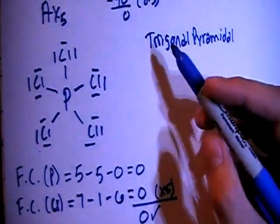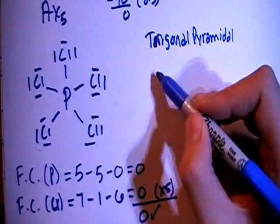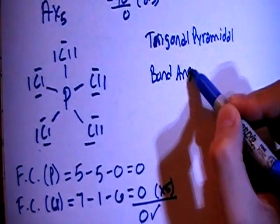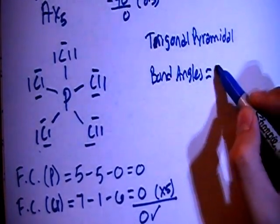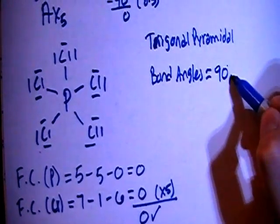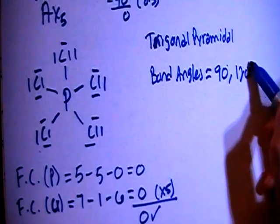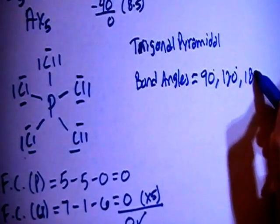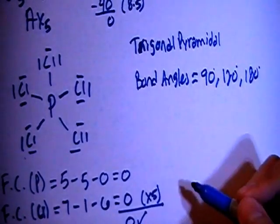In this shape, the bond angles are – there's actually a couple of angles here. There's a 90-degree angle between the top and the flat plane. There's a 120-degree angle between each of the three corners of the triangle. And then there's a 180-degree angle between the top and the bottom above and below the plane.